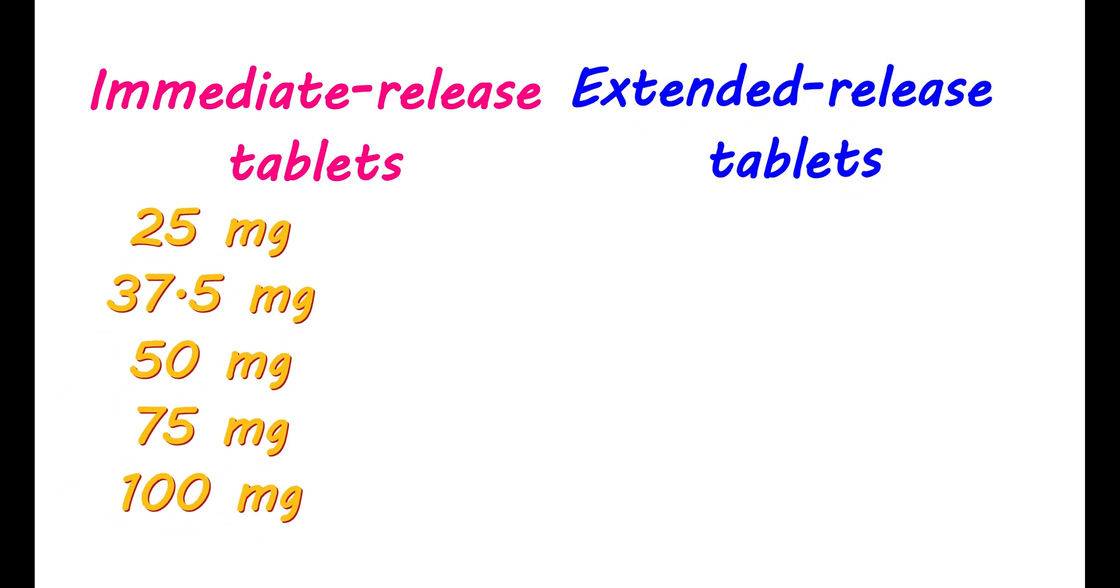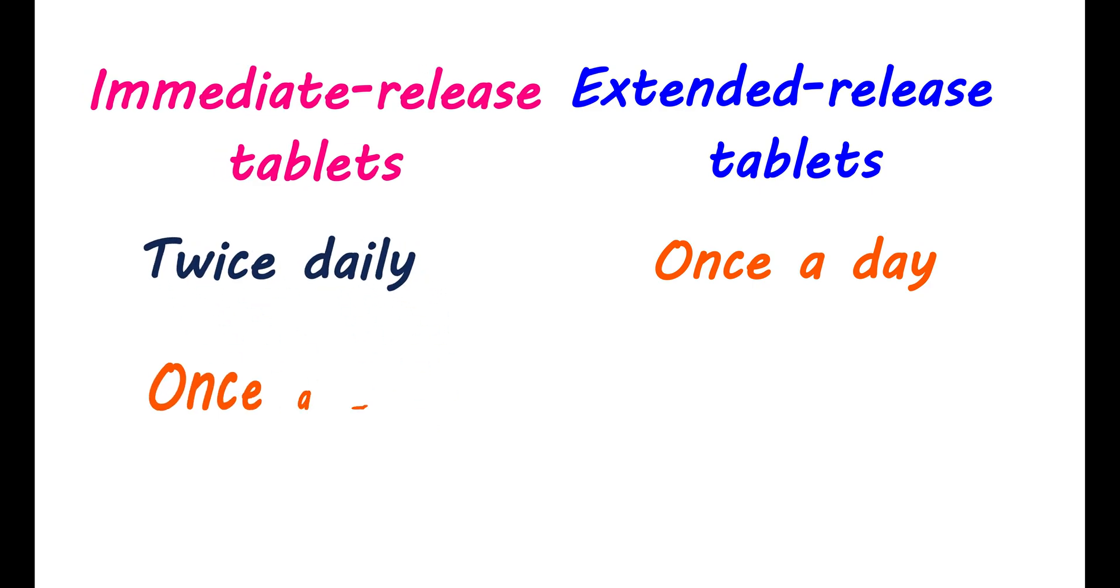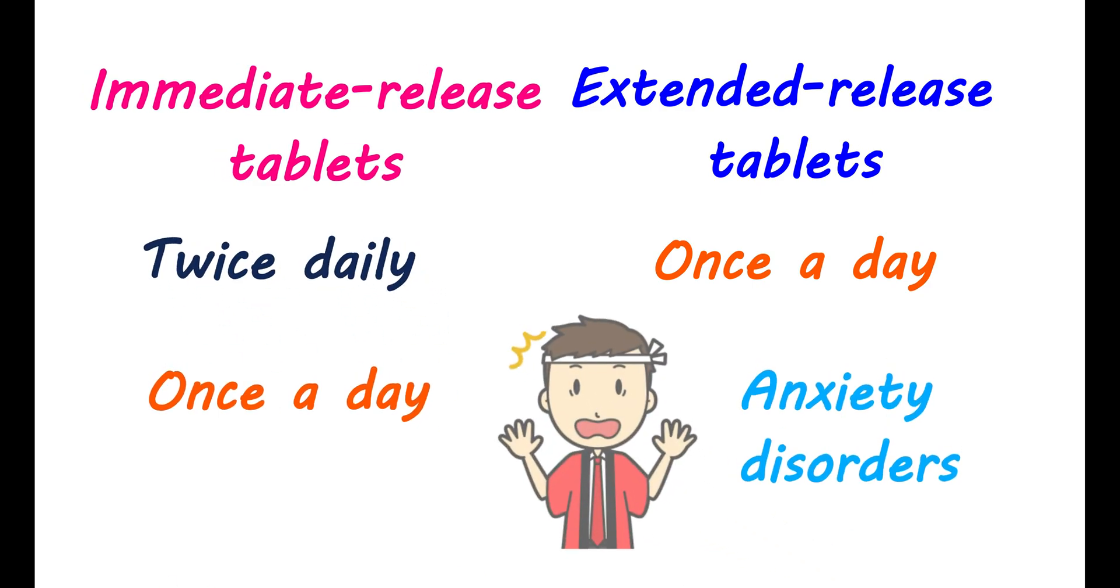Immediate release tablets are available in different strengths, starting from 25 mg to 100 mg. Extended release tablets are available in four strengths, from 37.5 mg to 225 mg. These two types of dosage forms are not equivalent and differ in the rate of drug release. Venlafaxine is slowly released from extended release tablets. Extended release tablets are taken once a day. However, immediate release tablets can be taken either twice daily or once a day. In treating anxiety disorders, extended release tablets are more preferred. Check the label before taking and never replace them with one another.